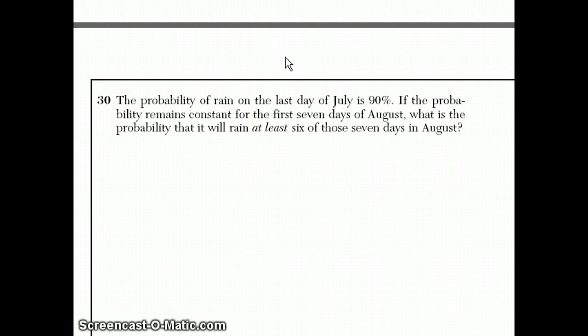It says the probability of rain on last day July is 90 percent. If it remains constant for the first seven days of August, what's the probability that it will rain at least six of those seven days? This is what's known as binomial probability, or Bernoulli probability.